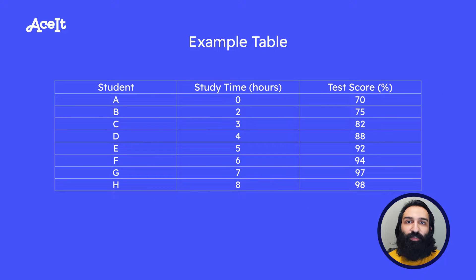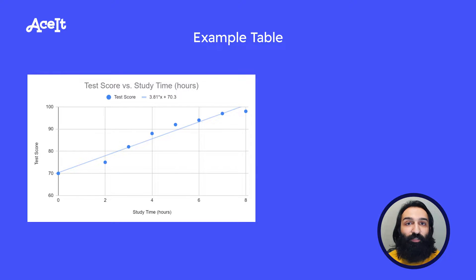Here we have a fake generated table that represents study time in relation to student test score. We can see that as study time increases so does the test score. One of the best ways to visualize this table is to use a scatter plot.